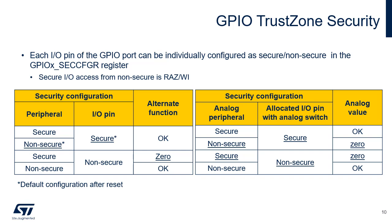If this rule is not respected, the input data to the secure peripheral is forced to zero and the output pin value is forced to zero, thus avoiding any secure information leak through non-secure input/outputs. For input/outputs with analog switches directly controlled by peripherals — such as the ADC — if the input/output is secure, the analog switch cannot be controlled by a non-secure peripheral. If this is not respected, the switch remains open, preventing the redirection of secure data to a non-secure peripheral or input/output through the analog path.